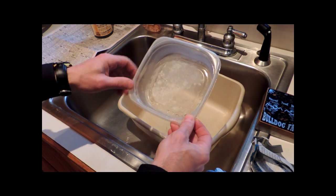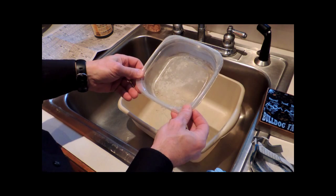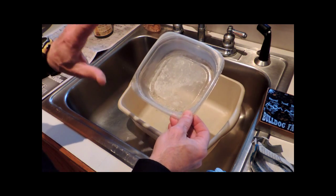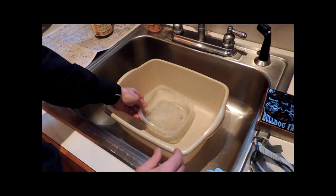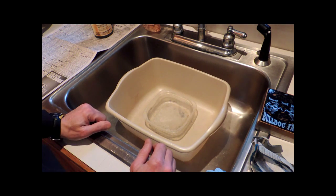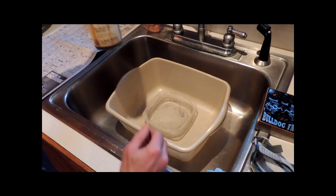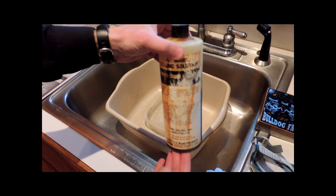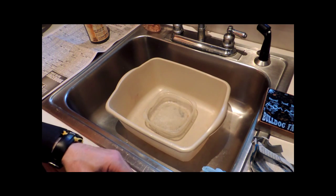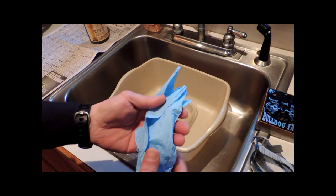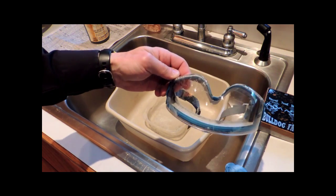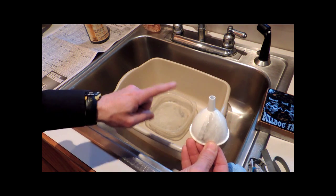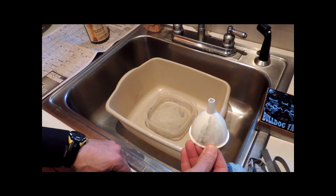The actual etchant's going to go in this little disposable plastic Tupperware container. Never use anything that comes into contact with food. So when you do this, you want to make sure you do it with something that you will dispose of afterwards. And so this is going to sit inside the larger tub, which then sits inside the kitchen sink. Now I'm going to be using ferric chloride, which is a standard PC board etchant that's widely available.